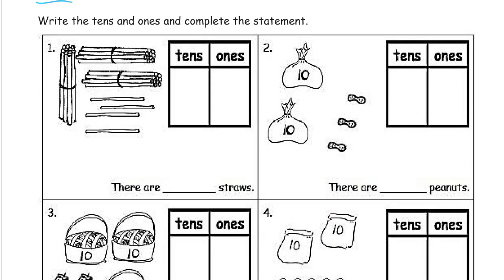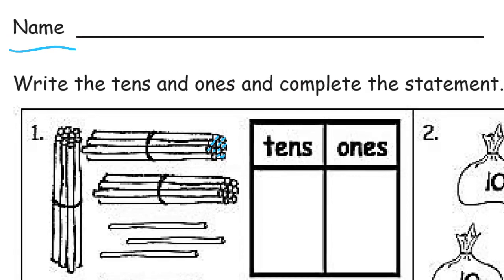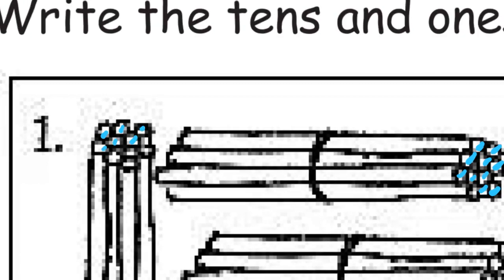Write the tens and ones and complete the statement. So just like in lesson one, we're seeing groups of ten. If you zoom in, I'll do it again here. You zoom in and count these one, two, three, four, five, six, seven, eight, nine, ten. There are ten straws in that bundle, and there isn't going to be anything else like that. That's how you're going to see it. There's going to be ten. This bundle too, one, two, three, four, five, six, seven, eight, nine, ten.